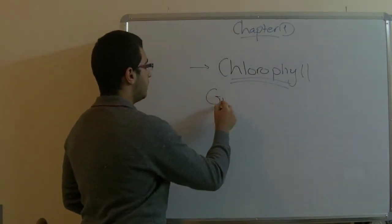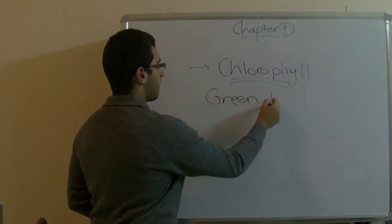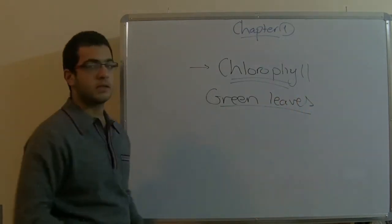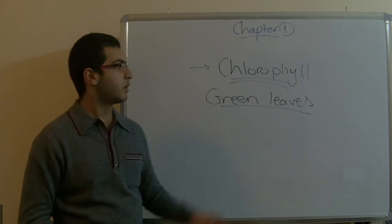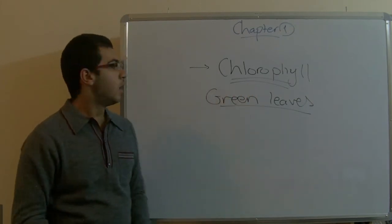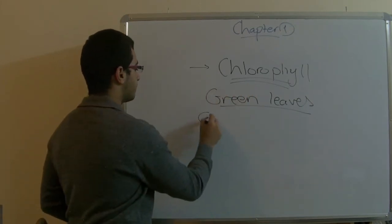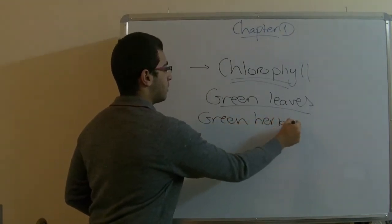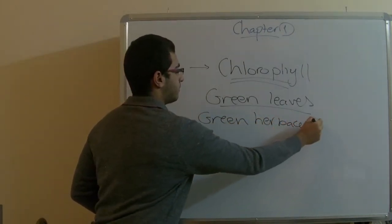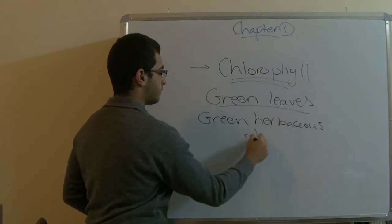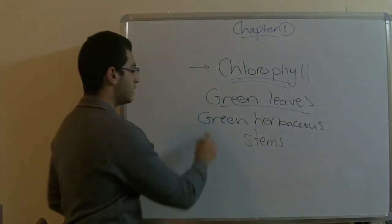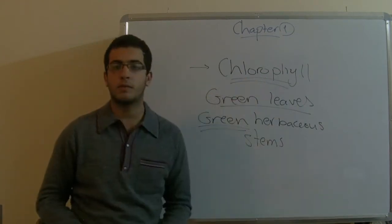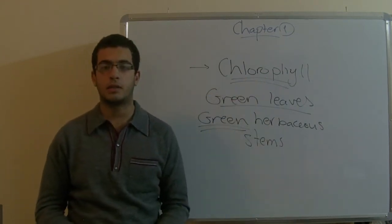The green leaves are the main sites of photosynthesis because they contain the chlorophyll. Also, some green herbaceous stems of plants, as they are green, they contain the chlorophyll and they participate somehow in the photosynthesis process.